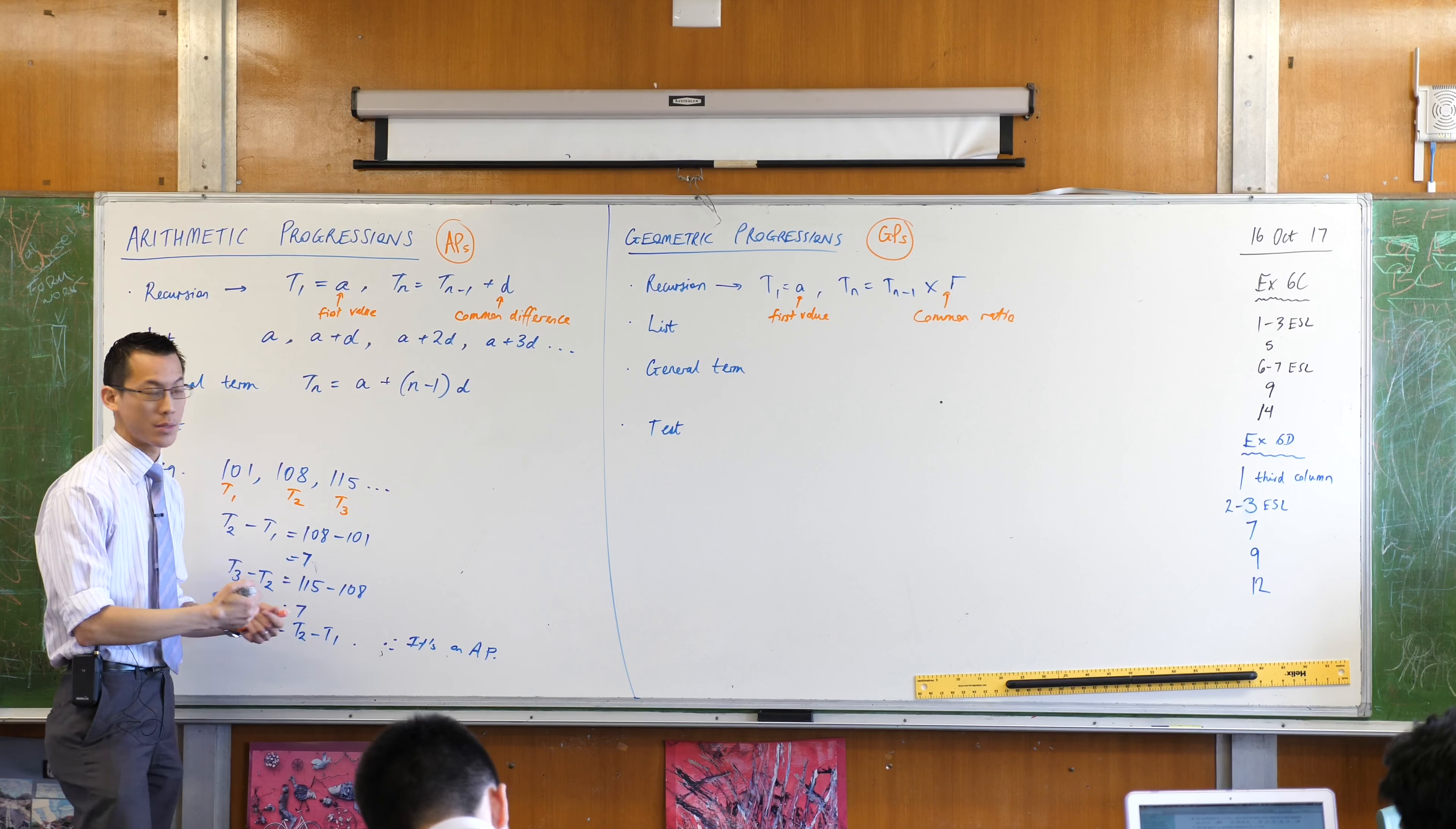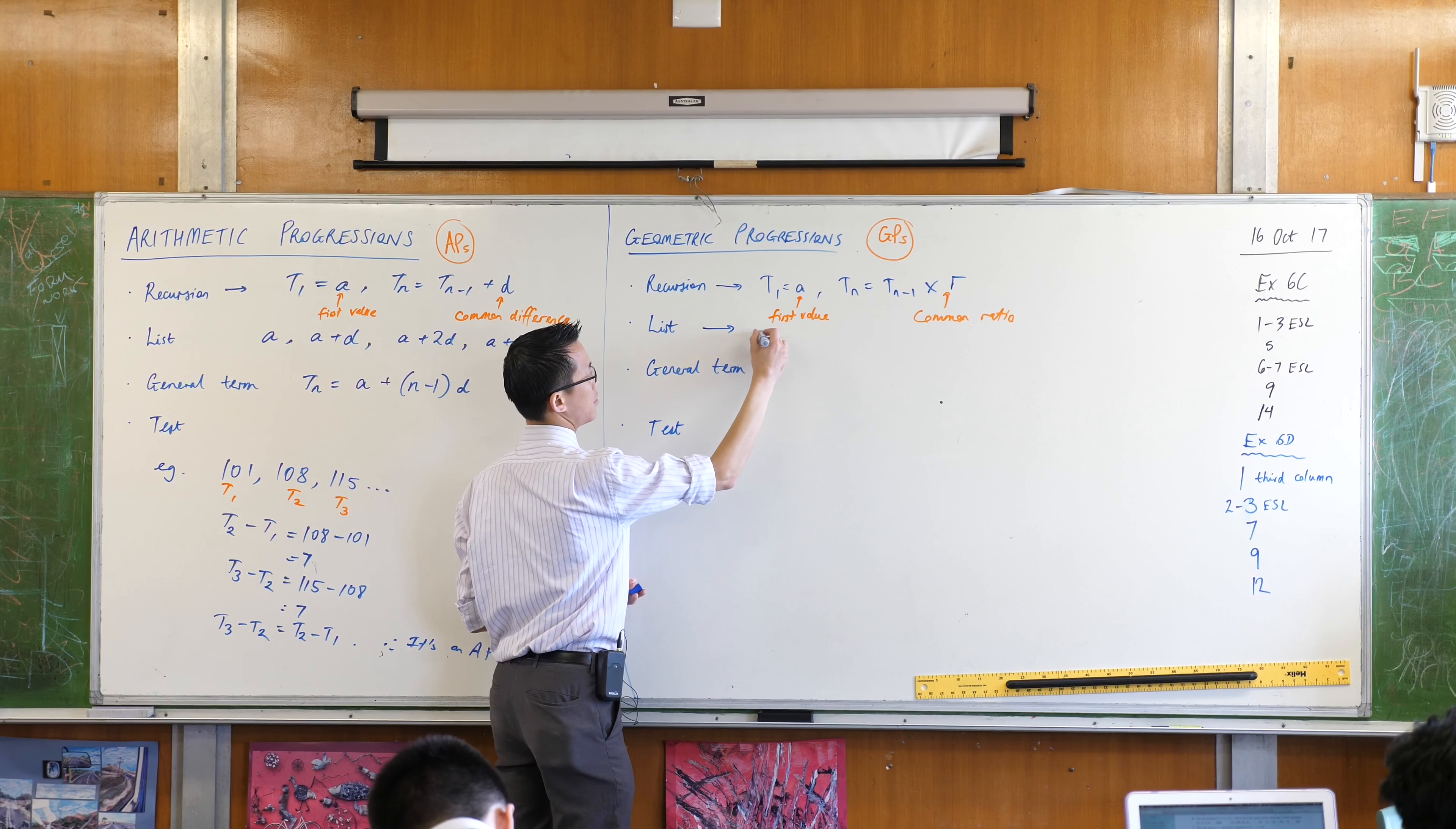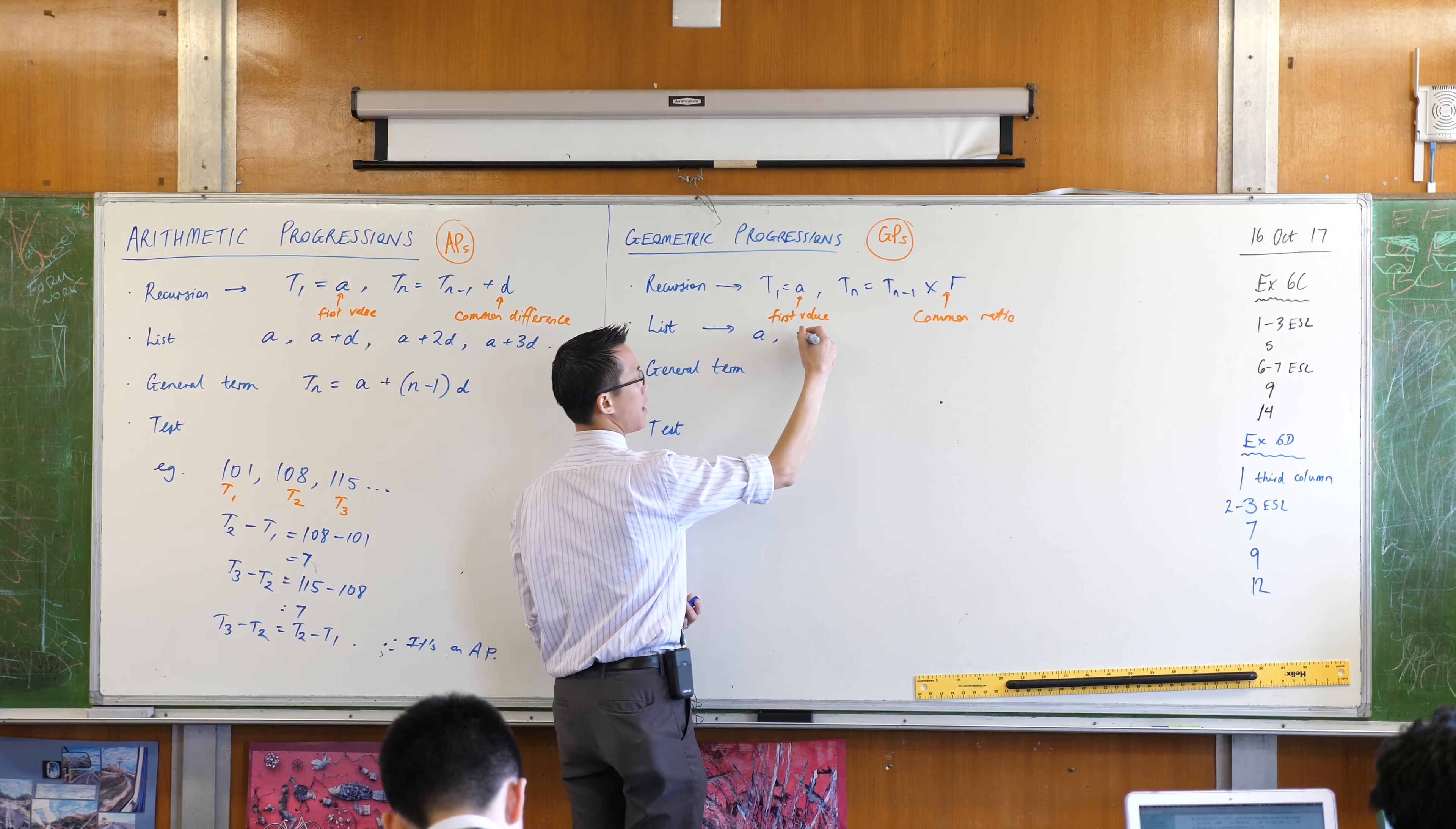It's very easy to list out what the terms will be. We'll start with A, just like we did before, but the next term will not be A plus something, it'll be A times R. So it will just be AR.